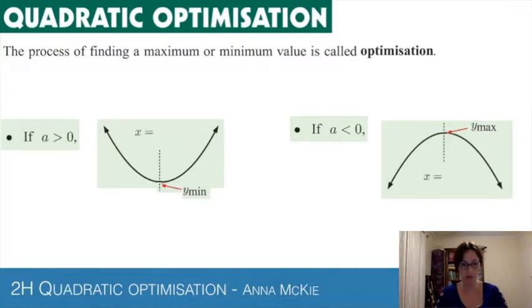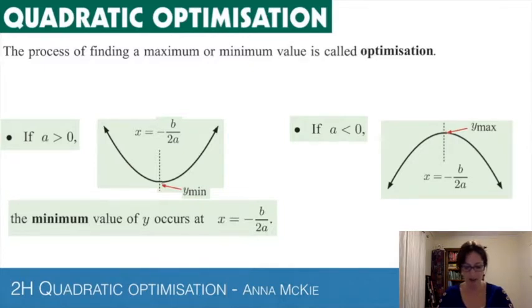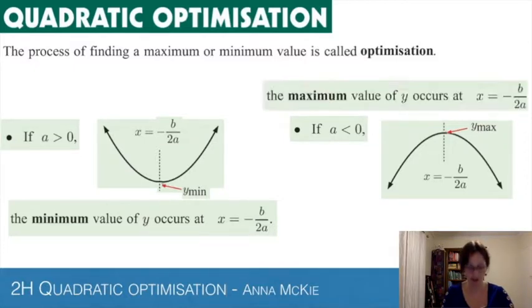And what is the x value for that? It is -b/2a, where b and a are the coefficients in the quadratic - a is the coefficient of x² and b is the coefficient of x. That is the x value at that point, and if you substitute that in, that's how you get the y value of the min or max. The minimum value of y occurs at this x value, and same for the maximum - it's the same x value.